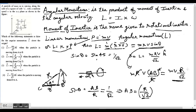The unit vector is k̂, and we get this by applying the right-hand rule for angular momentum. k̂ is the unit vector in the direction of the z-axis. The right-hand rule says that if you curl your fingers in the direction of motion of the particle, then your thumb will give you the direction of angular momentum.